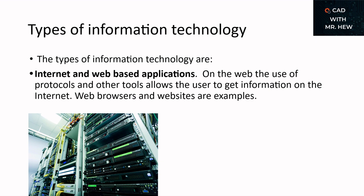One type of information technology is internet and web-based applications. On the web, the use of protocols and other tools allow the user to get information on the internet. Web browsers and websites are examples.